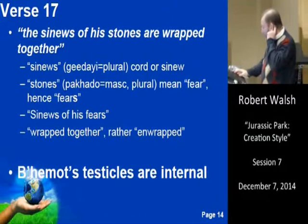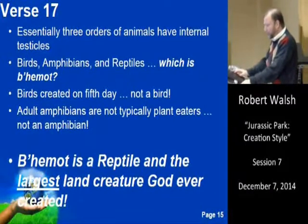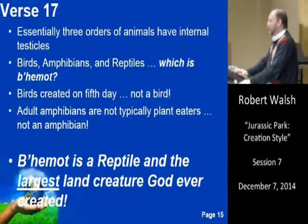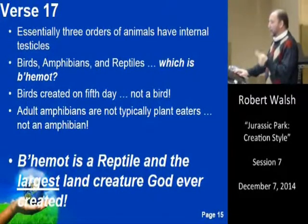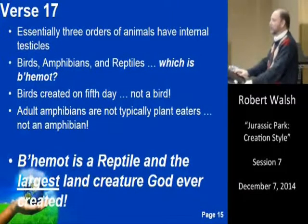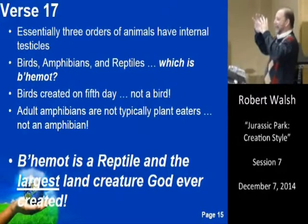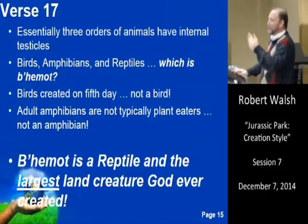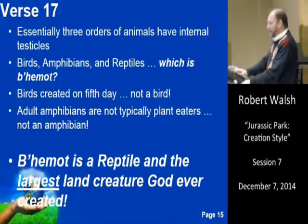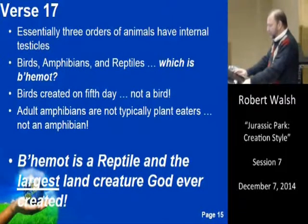There are three orders of animals with internal testicles: birds, amphibians, and reptiles. Birds were created on the fifth day, and Behemoth was created on day six. Adult amphibians are typically not plant eaters, so he can't be an amphibian. Therefore, Behemoth is a reptile — and the largest land creature God ever created.